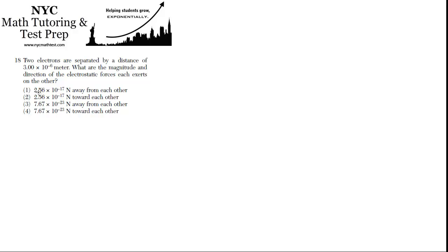Problem 18: Two electrons are separated by a distance of 3×10^-6 meters, which is 3 millionths of a meter or 3 micrometers.